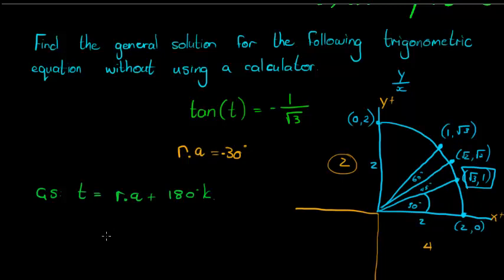Where the other function repeats itself, or themselves, every 360 degrees. So our reference angle is negative 30 degrees plus 180 degrees times k, where k is an integer.